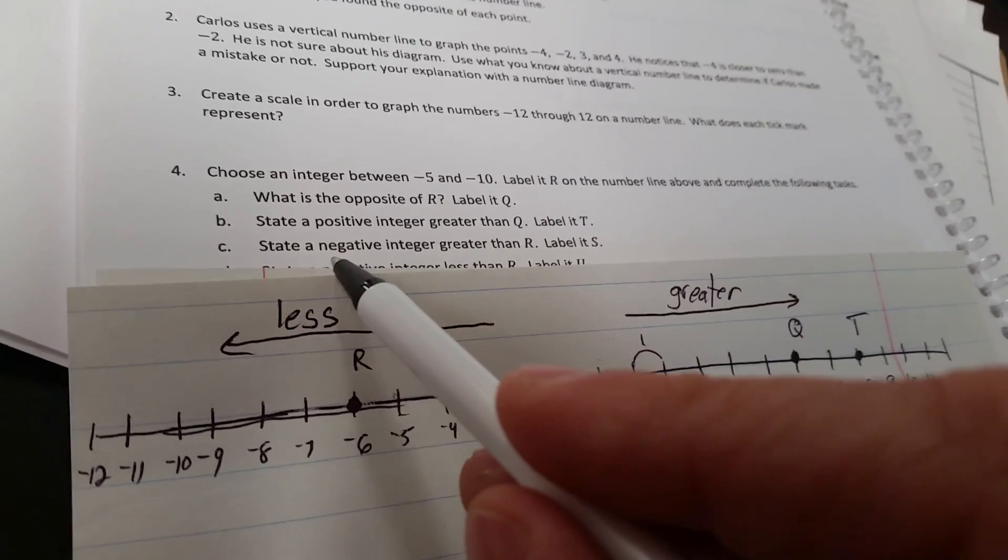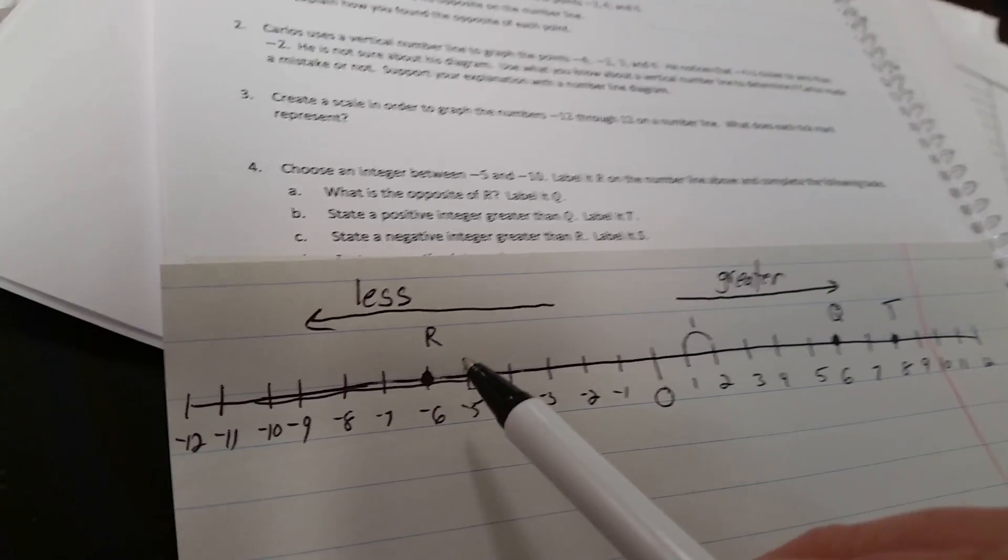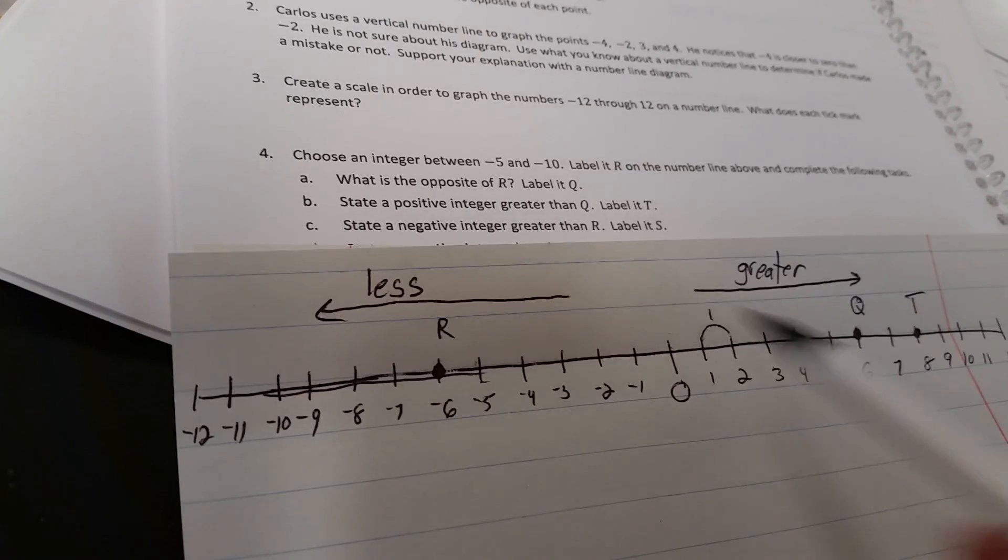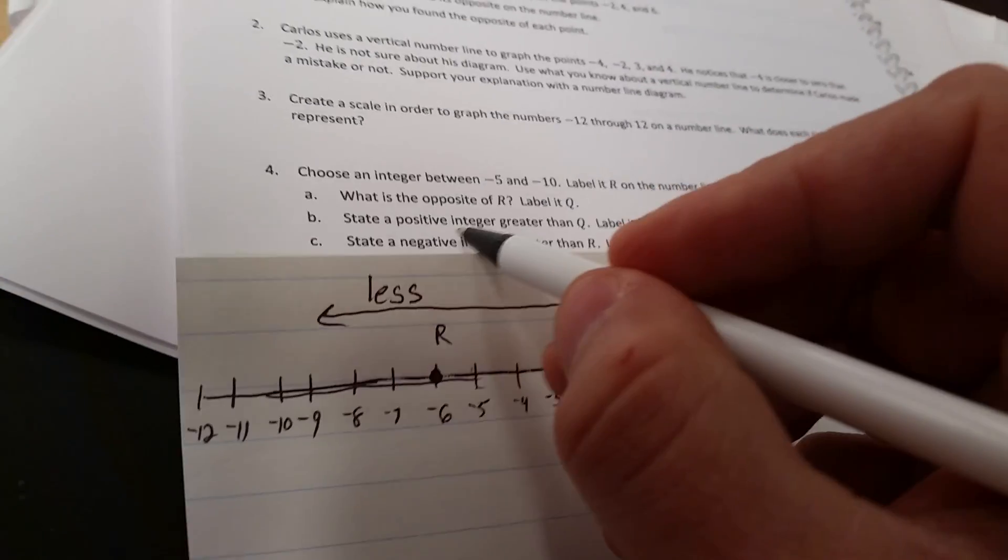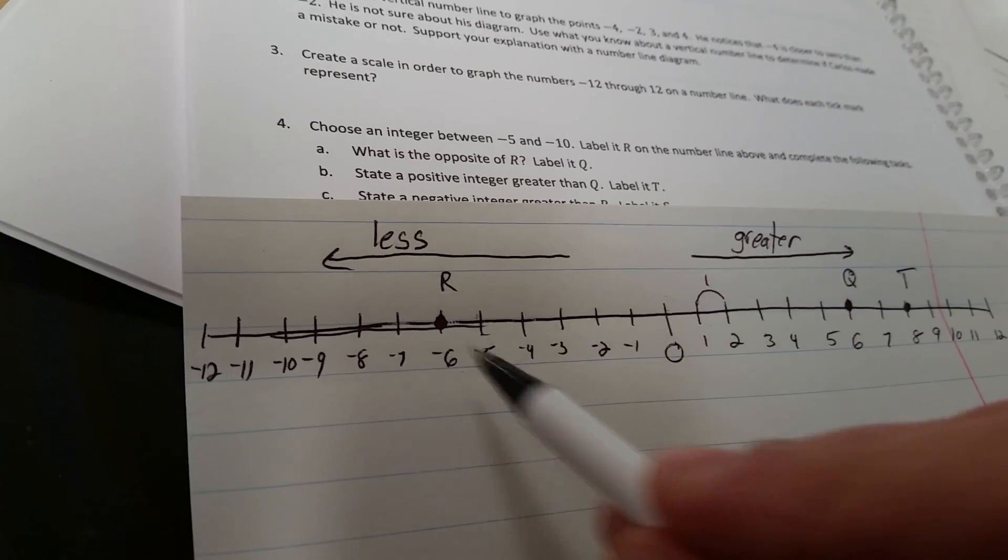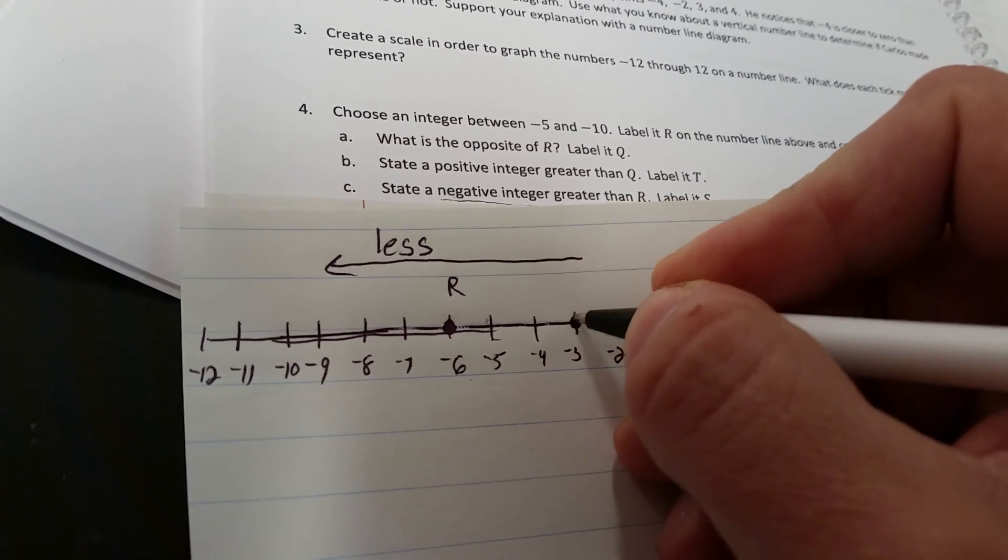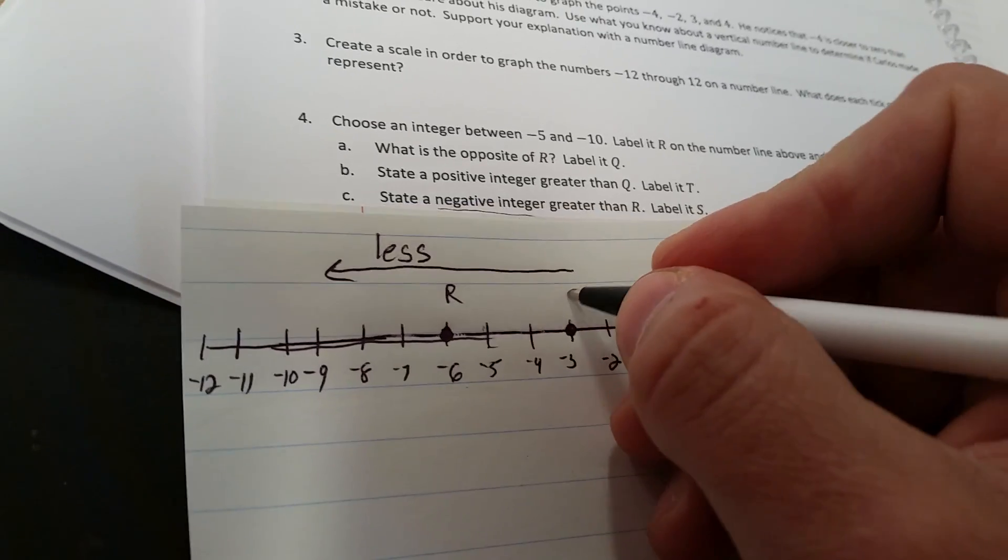Question C. State a negative integer greater than r. Well, here's r, and we said for values to be greater, we're going to move to the right. And they're really saying they want a negative integer, so it has to be one of these five integers. So I'm going to choose negative 3, and we're going to label that s.